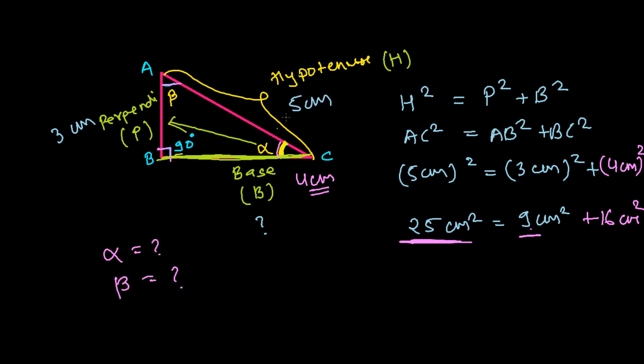These are all the things I told you just to clear your doubts. If you want to find out alpha or beta, you just find out at least one. If you find out alpha, you can easily find out beta because that's 90 minus alpha. So I'm just trying to find out alpha.